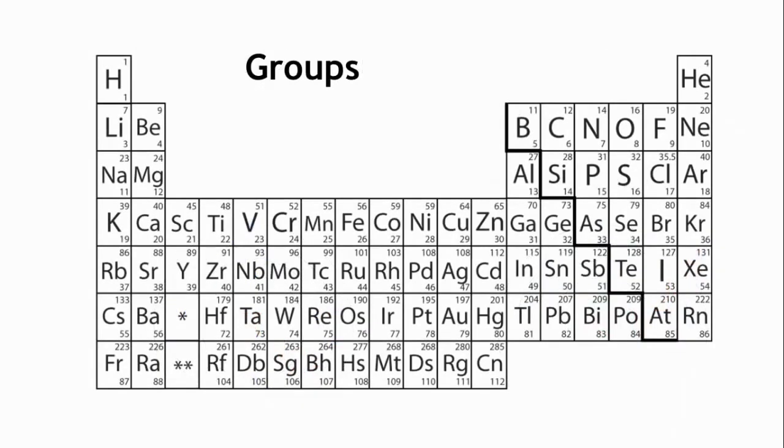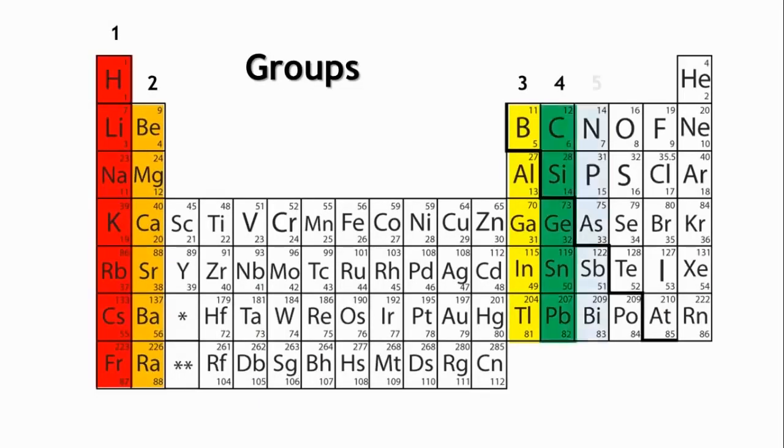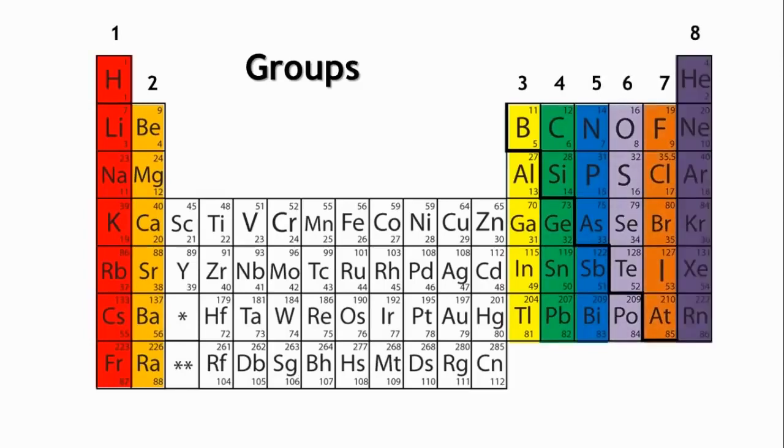The columns going down, from top to bottom, are the groups. Elements in the same group also have something in common. Elements in the same group have the same number of electrons in their outermost shell. The electrons in the outer shell are called the valence electrons.